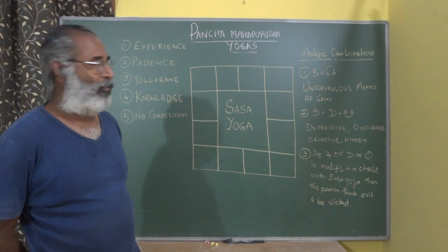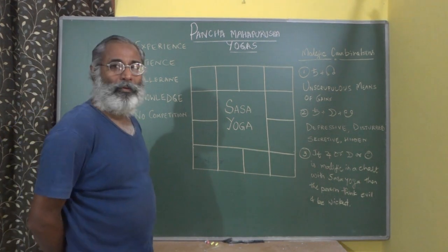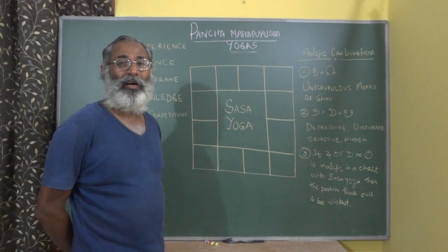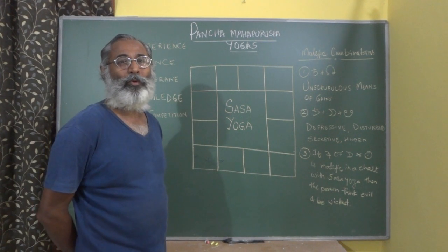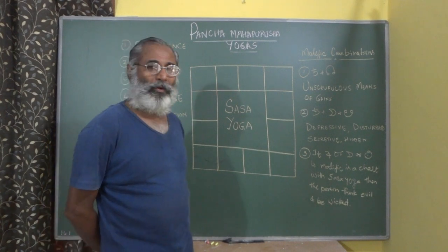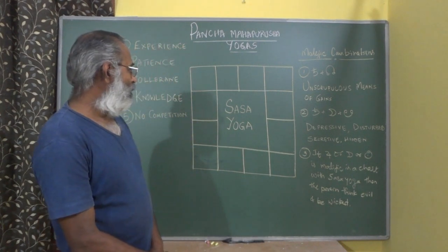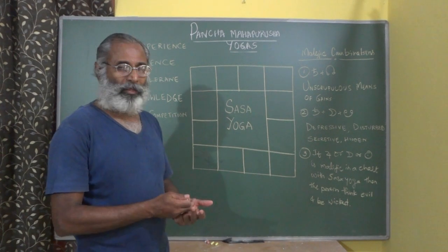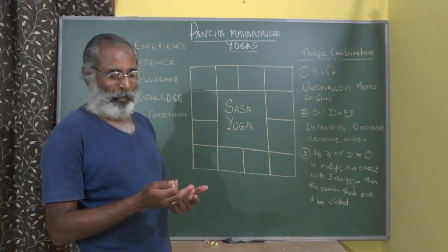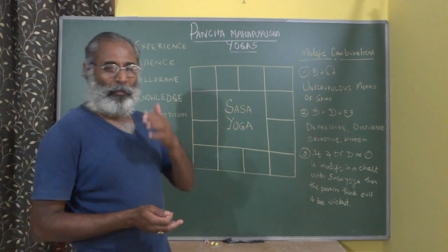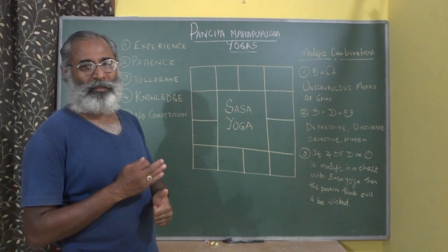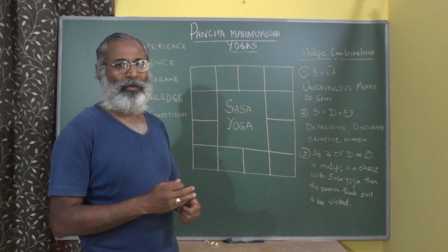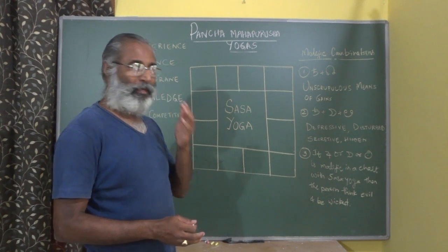Hello, this is Shesha Chalam from Astro Guide Mysore. Today we are discussing Sasa Yoga, a yoga of the highest caliber and most importance. Of all the Panchamahapurusha Yogas, we have seen Ruchaka Yoga of Mars, Bhadra Yoga of Mercury, Hamsa Yoga of Jupiter, and yesterday Malavya Yoga of Venus. Today we see the strongest Panchamahapurusha Yoga - Sasa Yoga.